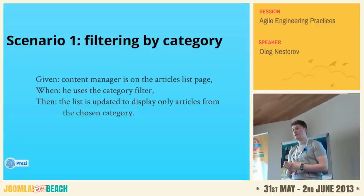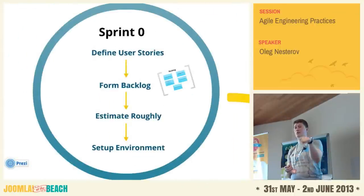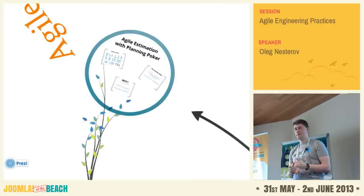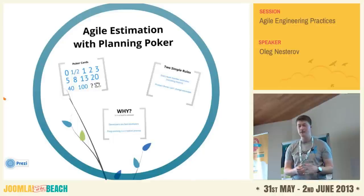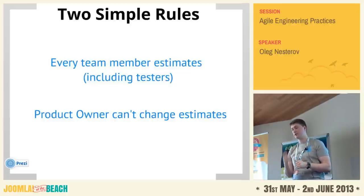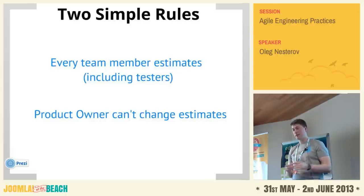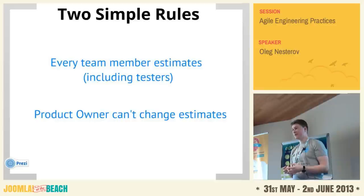Now we have features for the first release — next we estimate them with planning poker. Two simple rules: first, your entire team — each member — should make estimations. In Scrum you don't divide features by developers upfront; that's decided during daily stand-up meetings. All developers should estimate because people get sick or quit, so your team should be flexible enough to cover those losses. QA people should also estimate your features.